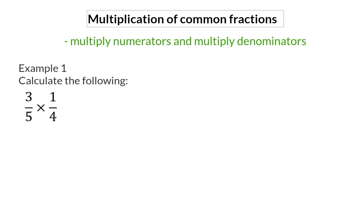When multiplying fractions, you can simply multiply the numerators and multiply the denominators. Example 1. Calculate the following. Here, we have two fractions that need to be multiplied. So, as I've already mentioned, we multiply the numerators, and 3 times 1 will give 3, and we multiply the denominators to get 20.